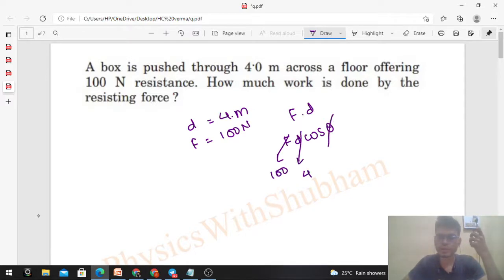And what will be the value of angle? That will be 180 degrees. You can see it is a resistive force, right, like friction, which will oppose the motion of the block or box. So the direction of the force will be opposite to the direction of displacement, so angle will be 180 degrees.